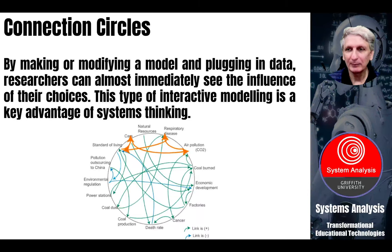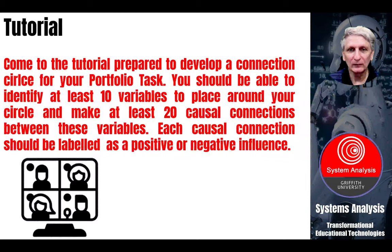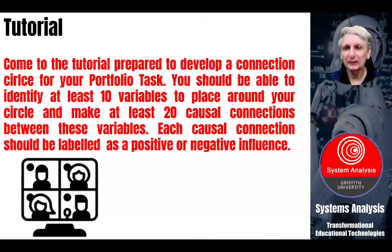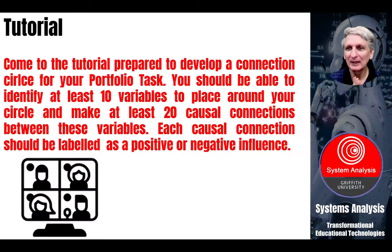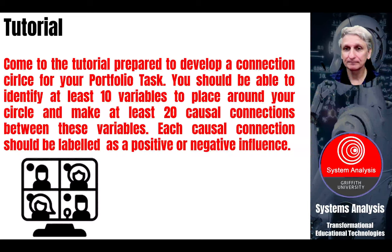Let's have a look at some examples of connection circles and how to make them. In your tutorial you should come along with a connection circle that you can share. You should have identified at least 10 elements around the outside and at least 20 connections between those various elements, remembering one element can affect more than one other element. Your educational technology will probably impact a number of different other elements — parents may impact students, teachers should hopefully impact students — so there are going to be a lot of different connections as you build out your connection circle and better understand the system.